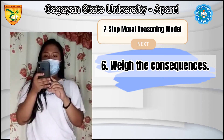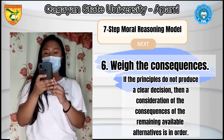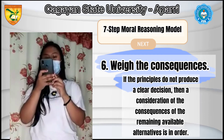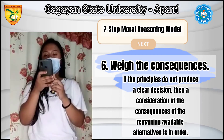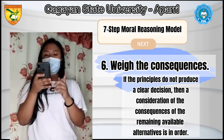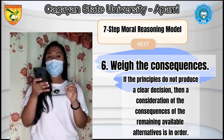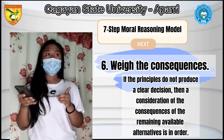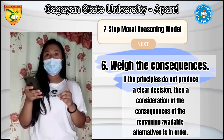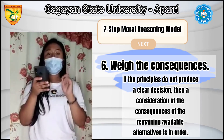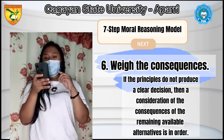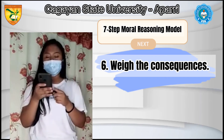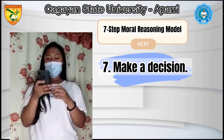Six, weigh the consequences. If the principles do not produce a clear decision, then a consideration of the consequences of the remaining available alternatives is in order. For example, if the solutions you have suggested don't settle the conflict between both sides, ask both sides to give their opinion to settle the matter or give them time to explain to each other.